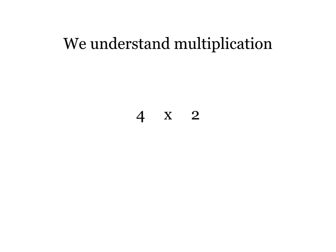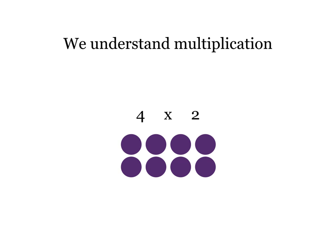In the same way, we understand multiplication. If we have four times two, we can draw a picture for that also, which in this case would be a four by two array. Count all those dots. There's eight of them. That's our answer.